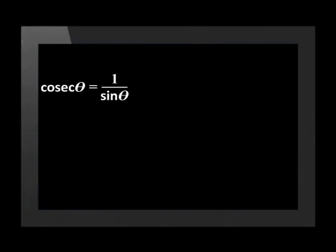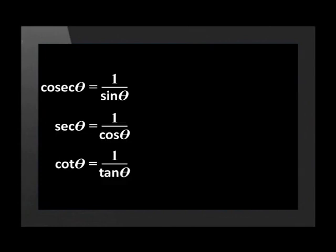Sine and cosec are reciprocal ratios. Therefore, cosec theta equals one over sine theta. Cos and sec are reciprocal ratios. Therefore, sec theta equals one over cos theta. Tan and cot are reciprocal ratios. Therefore, cot theta equals one over tan theta.